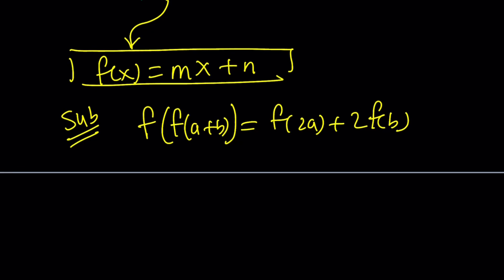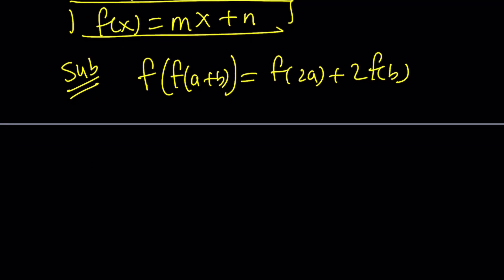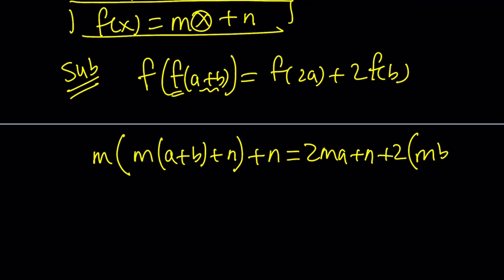Now, since we have an expression for f of x, we can use it on both sides. f of a plus b is going to be the argument multiplied by m and then add n to it. That's the first application. If you apply f again on this, this is going to be your input now. You're going to multiply this whole thing by m and add n to it. Make sense? You're doing it twice. Now, f of 2a is just going to be 2ma plus n. And 2 times f of b—f of b is just mb plus n.